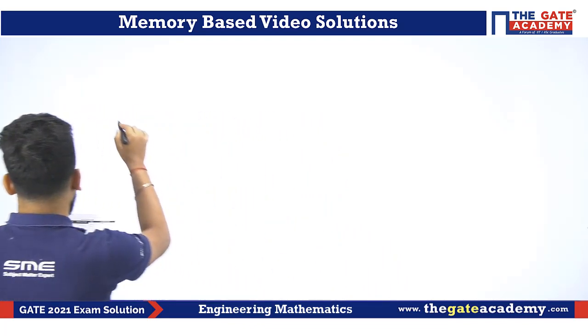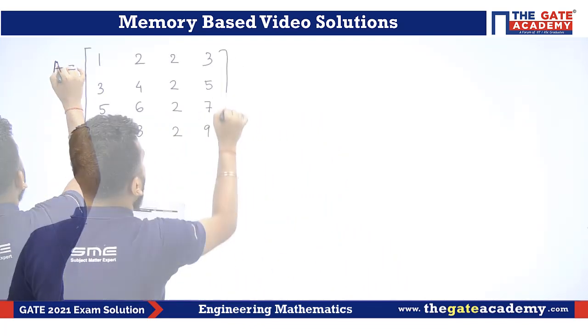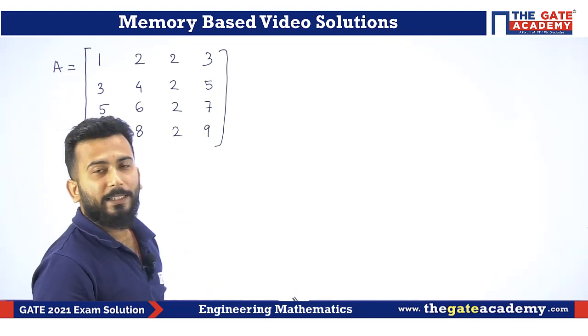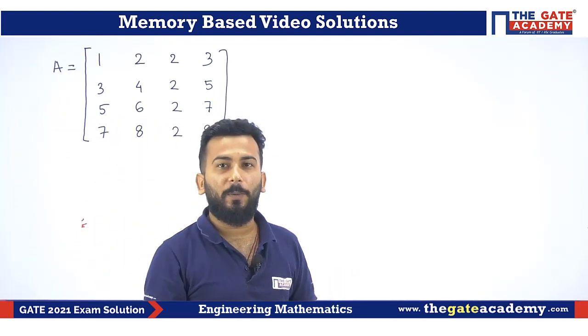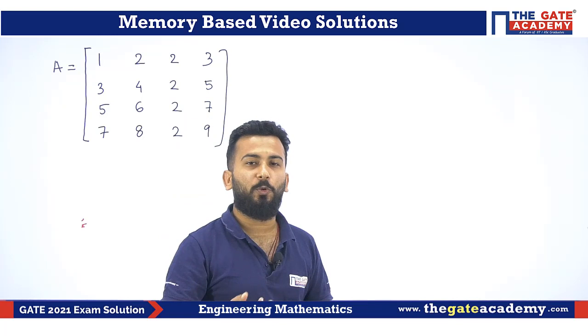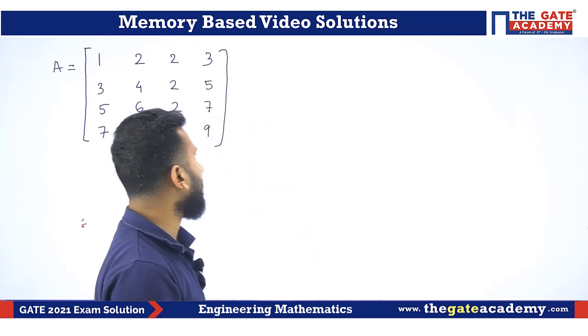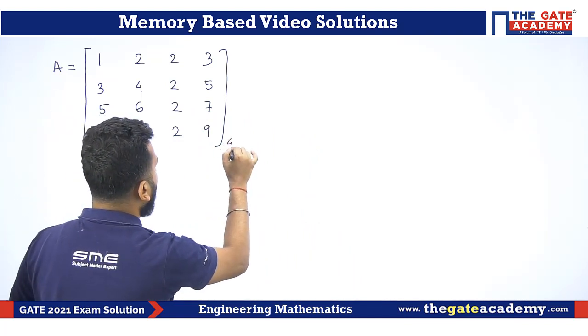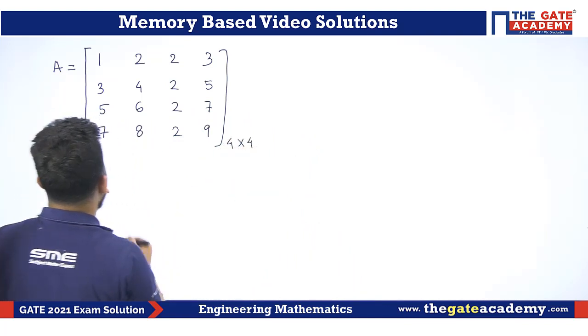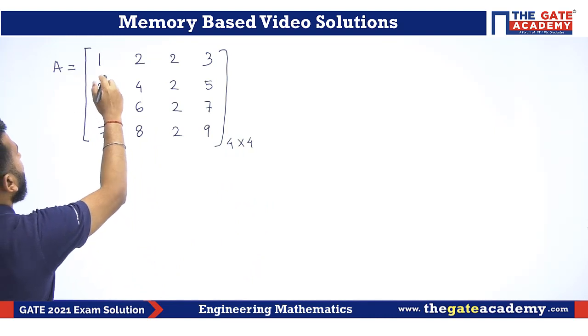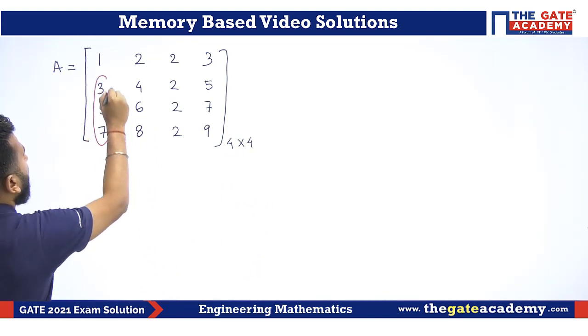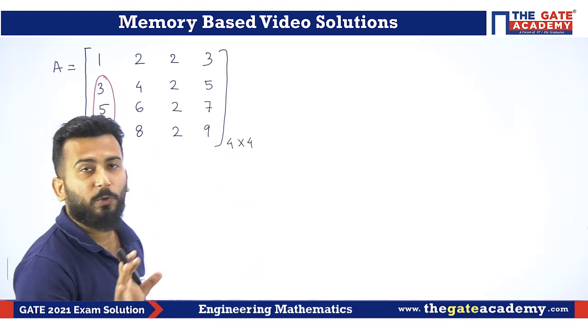The next question is a matrix has been given, 4 by 4 given and you need to find its rank. Let me write the matrix. 4 by 4 matrix, everyone knows that we need to convert this matrix into row echelon form. Yes, row echelon form. Pretty easy. It's a 4 by 4 matrix. What I will do? I will try to make these elements as 0. I hope that everyone knows row echelon form.